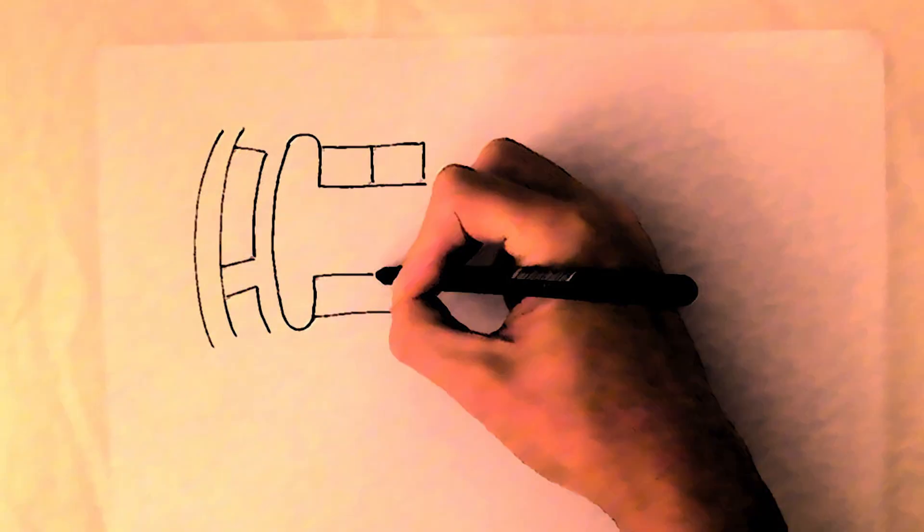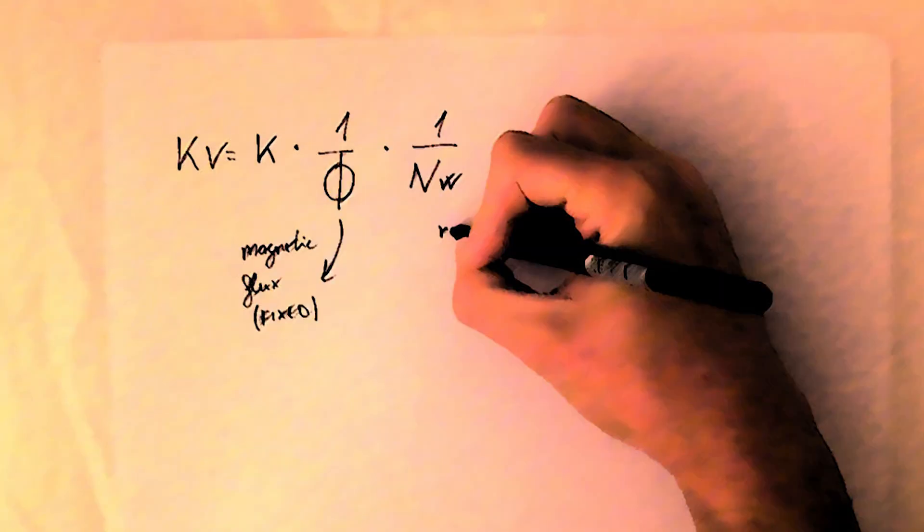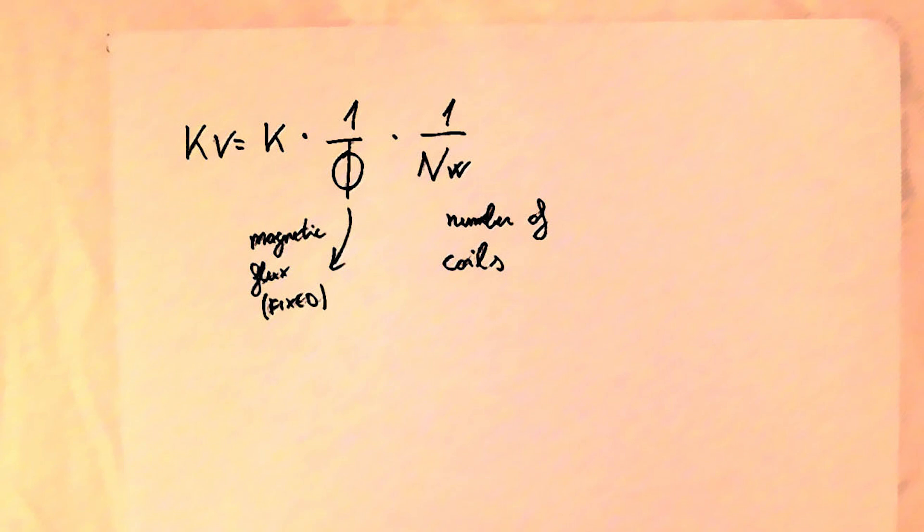So now suppose our hypothetical 4000 kV motor has just two coils. From the previous video you should know that the kV is inversely proportional to the number of coils.